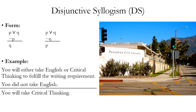Another implication rule is disjunctive syllogism, abbreviated DS. It has two versions: one premise is a disjunction P wedge Q, and the other is a negation of either the first or second disjunct. When you have two premises of that form, you can conclude the other disjunct must be true. For example: 'You will either take English or critical thinking. You did not take English. Therefore, you will take critical thinking.' If a disjunction is true but one disjunct is false, the other must be true.